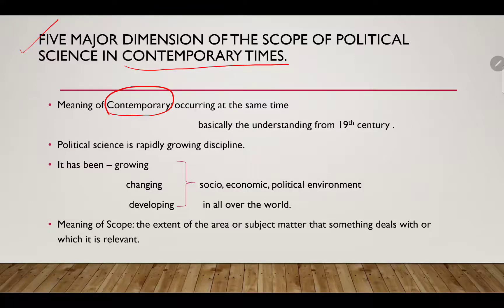Contemporary means occurring at the same time. In political science and international studies, it basically starts from the 19th century, because from the 19th century major advancements took place — there was the Industrial Revolution, the French Revolution, the East India Company started to colonize, and we witnessed World War One and World War Two.